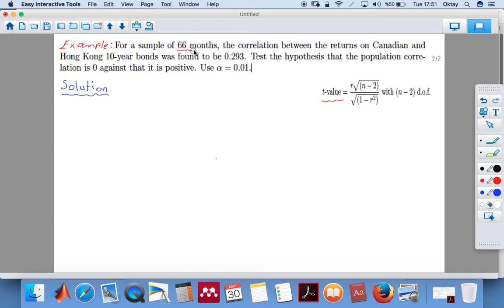The important part here is the 66 months which is in our question, so n equals 66. The correlation between them is 0.293, so r is 0.293. Use alpha 0.01, it's given. It says test the hypothesis, so let's say test. The null hypothesis H0 is population correlation is zero, versus or against means H1, population correlation is zero against its positive.